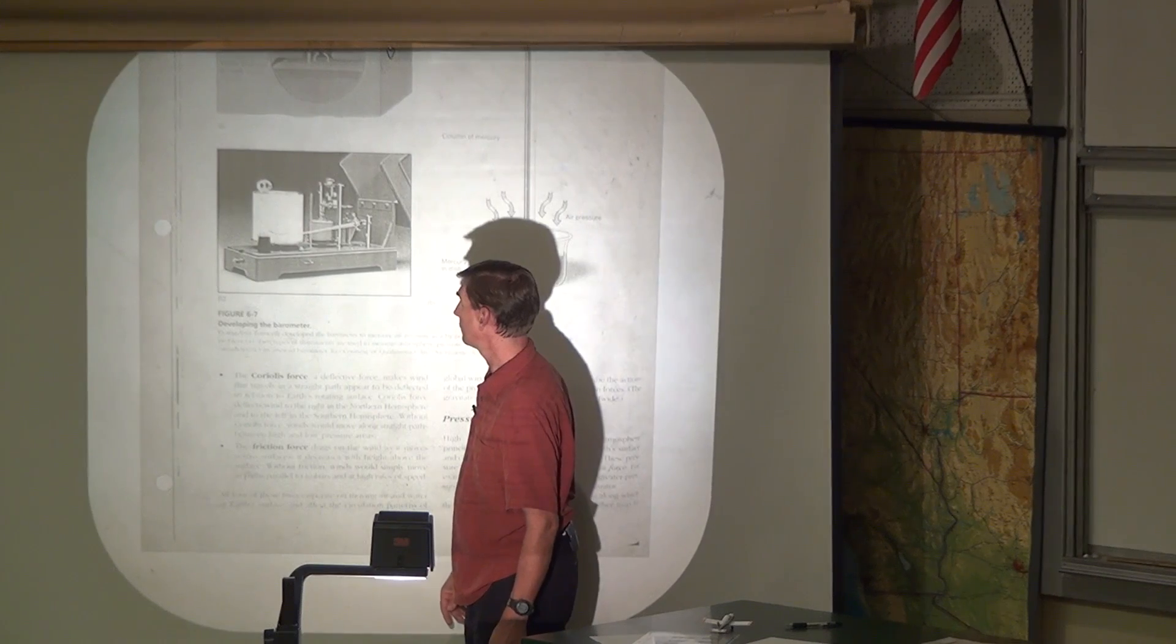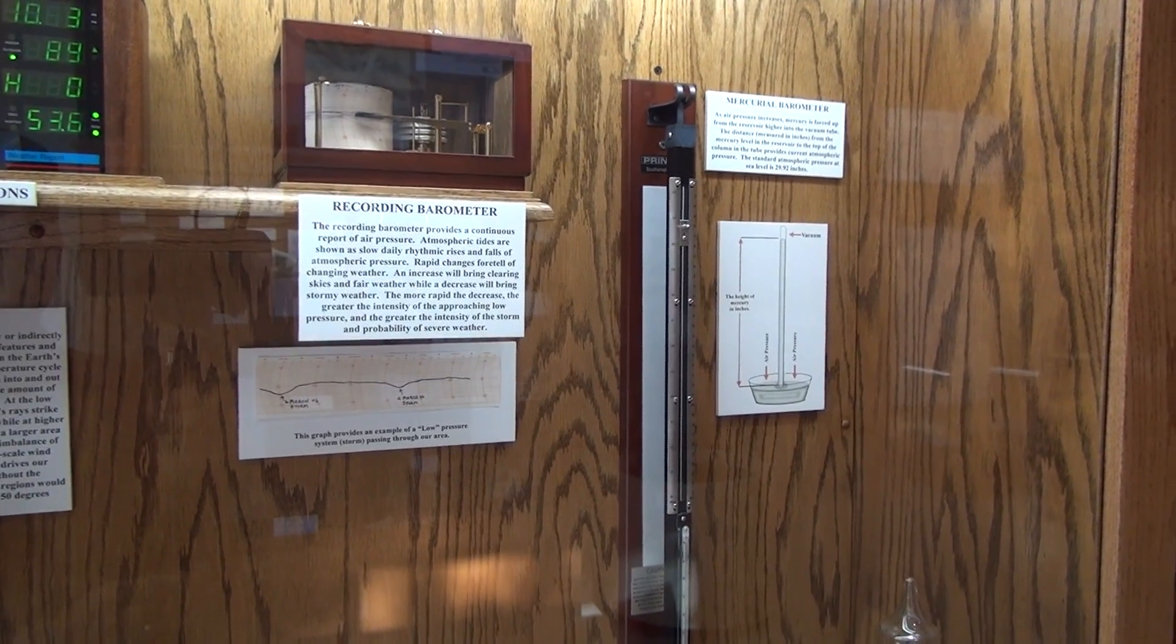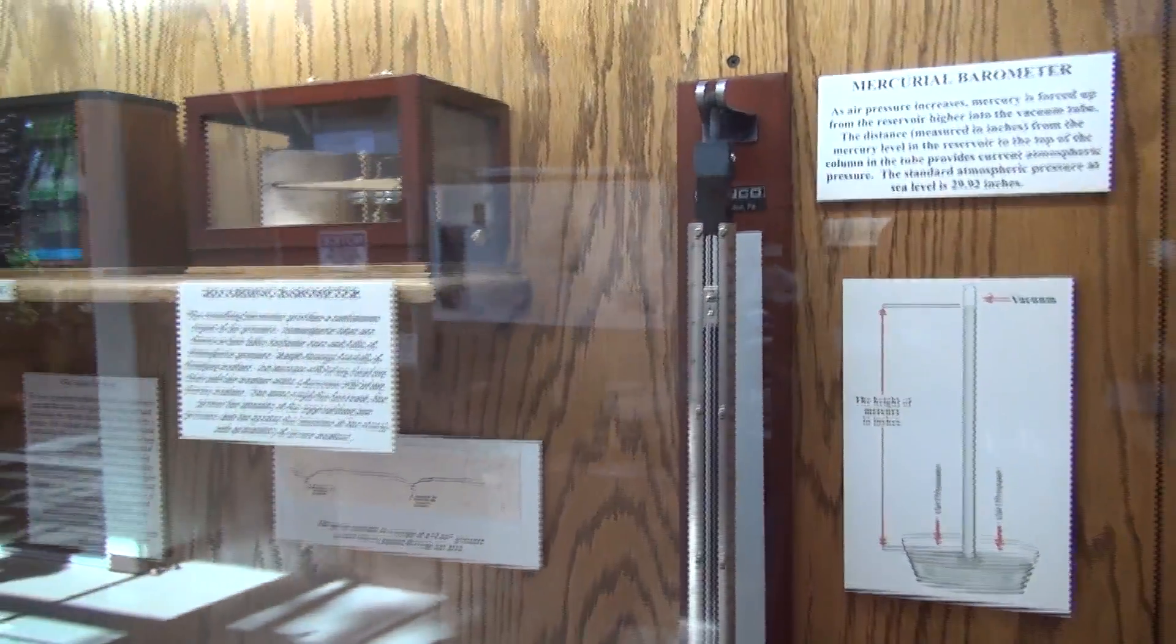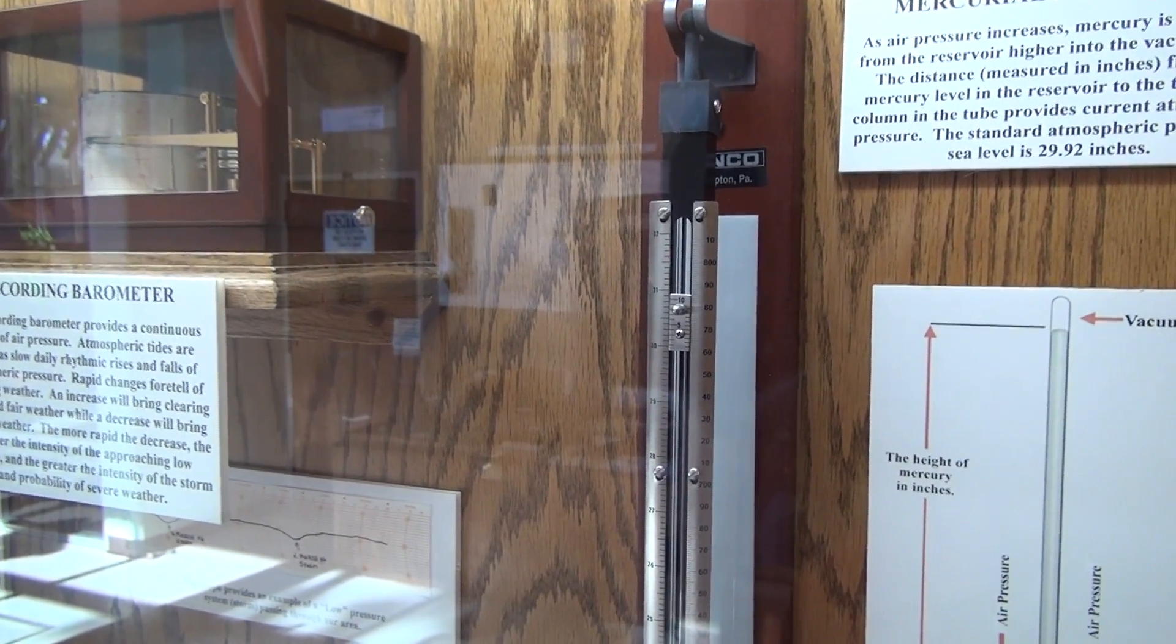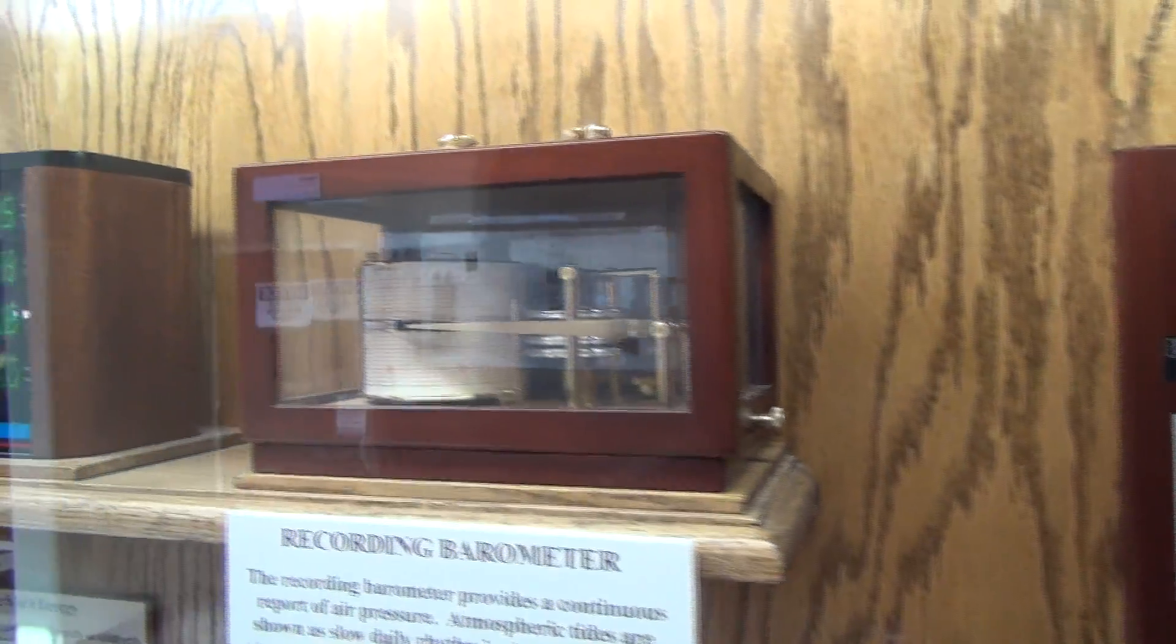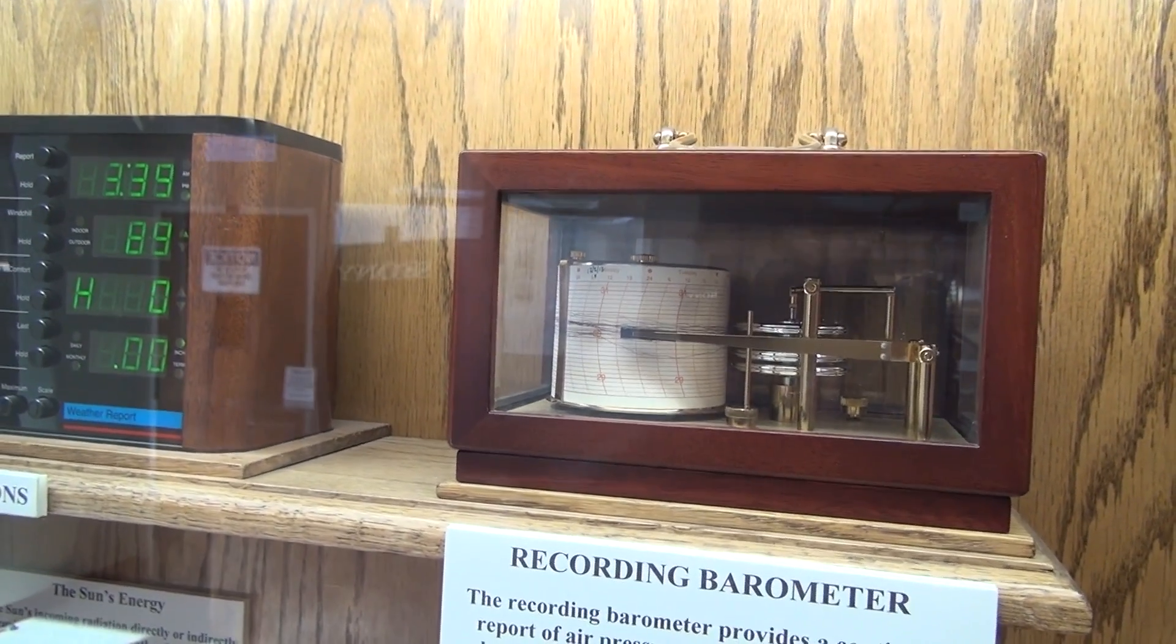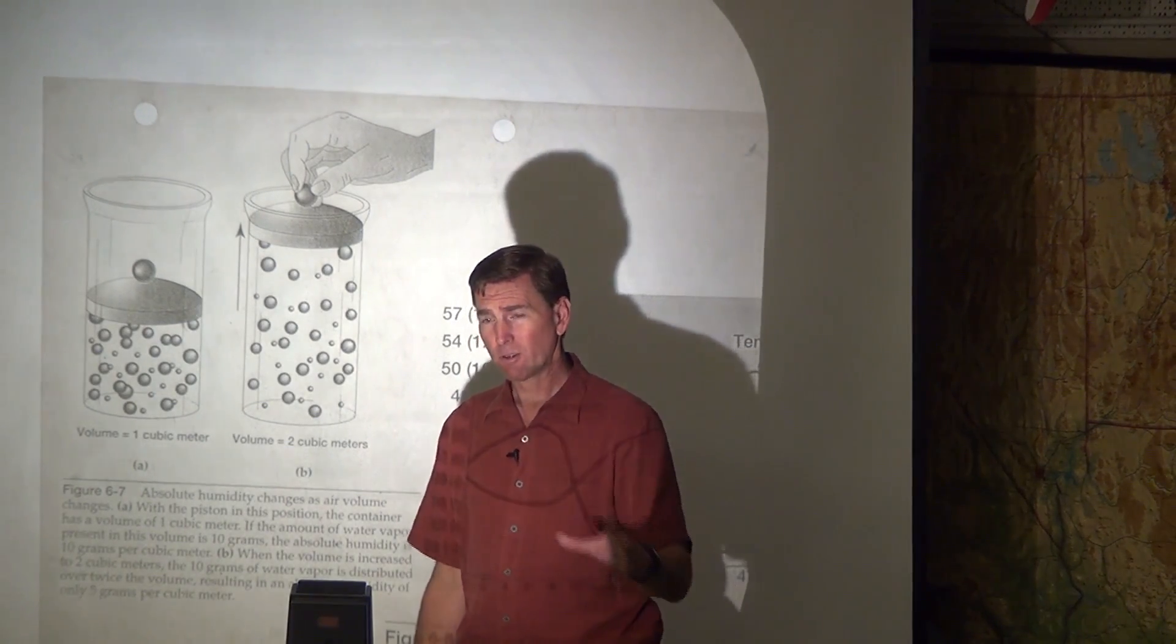So behind this glass cabinet here, we can see a mercurial barometer. It is quite tall, over 30 inches tall. And if we were to zoom in there, we would see that it would change. We could actually read the changes every day on the mercury going up and down. Then moving on over here, we can see an aneroid barometer, and it's actually recording the hourly changes daily.